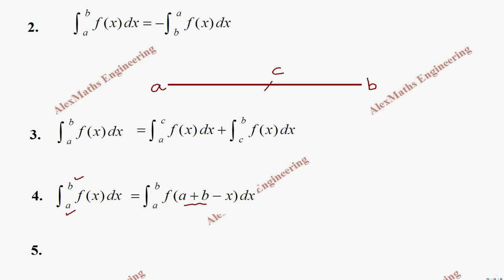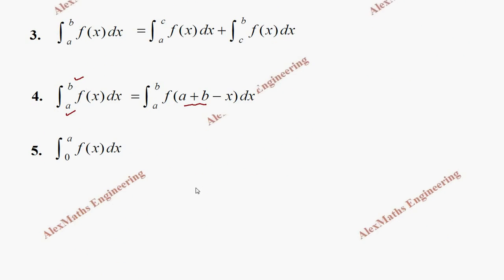Fifth property is a special case of the previous property. We have integral 0 to a of f(x) dx. Adding the lower and upper limits gives 0 + a = a, then subtracting x gives f(a − x). So this becomes integral 0 to a of f(a − x) dx.